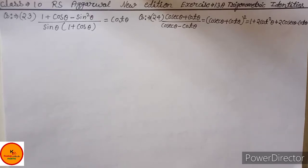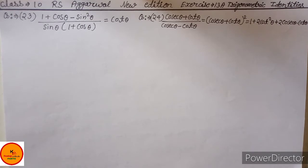Hello students, I am Ili Adov and welcome to my YouTube channel Knowledge Etude Maths Class 10. RS Aggarwal New Edition Exercise 13A Trigonometric Identities Question No. 23 and 24 are going to be solved. Before starting the video, please subscribe to my channel and press the bell icon so that you can get timely notifications.